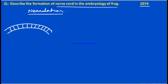The nervous system is originated from the ectoderm. Except for the meninges and microglia, the rest of the nervous system is originated from the ectoderm. So, the fate of the ectoderm is also going to be explained.